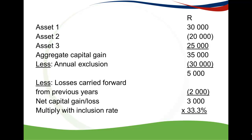If this were a capital loss, you would carry it forward to the next year of assessment. But in this case it's a capital gain, so we multiply it by the inclusion rate of 33.3% to get to the taxable capital gain. It's very important that you understand the framework and can apply it in every capital gains tax question: calculate the capital gain on each asset, add them together, deduct the losses, deduct your annual exclusion, then multiply by the inclusion rate if applicable.